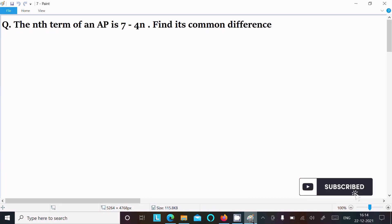In this video lecture, I'm going to find the common difference. The given is the nth term of an AP is 7 minus 4n. So let's see the answer. The nth term of an AP, so here an, that is given 7 minus 4n.